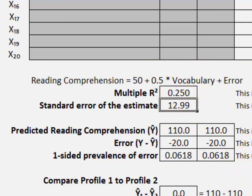The standard error of the estimate is 12.99. The predicted reading comprehension score in this case will be 110. The observed score of 90 is 20 points below expectations. How unusual is that?